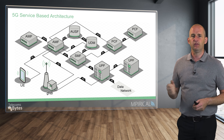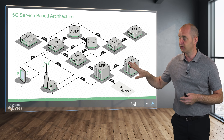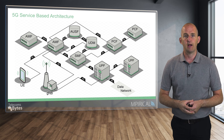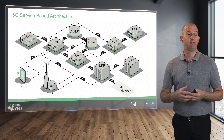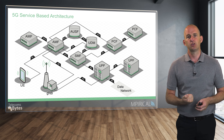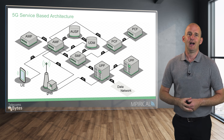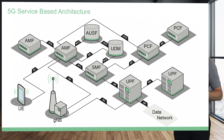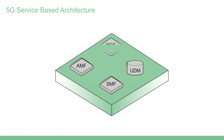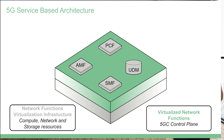Much of this architecture, particularly from the core network and particularly from the controlling element of the core network — so we're excusing the user plane function — much of it actually runs as a software process on top of a virtual infrastructure. So we use terminology like network functions virtualization or cloud native applications to describe the way in which elements of the 5G core network are actually implemented in real life. These network functions run as software on top of a virtualization infrastructure — in other words, a cloud infrastructure.